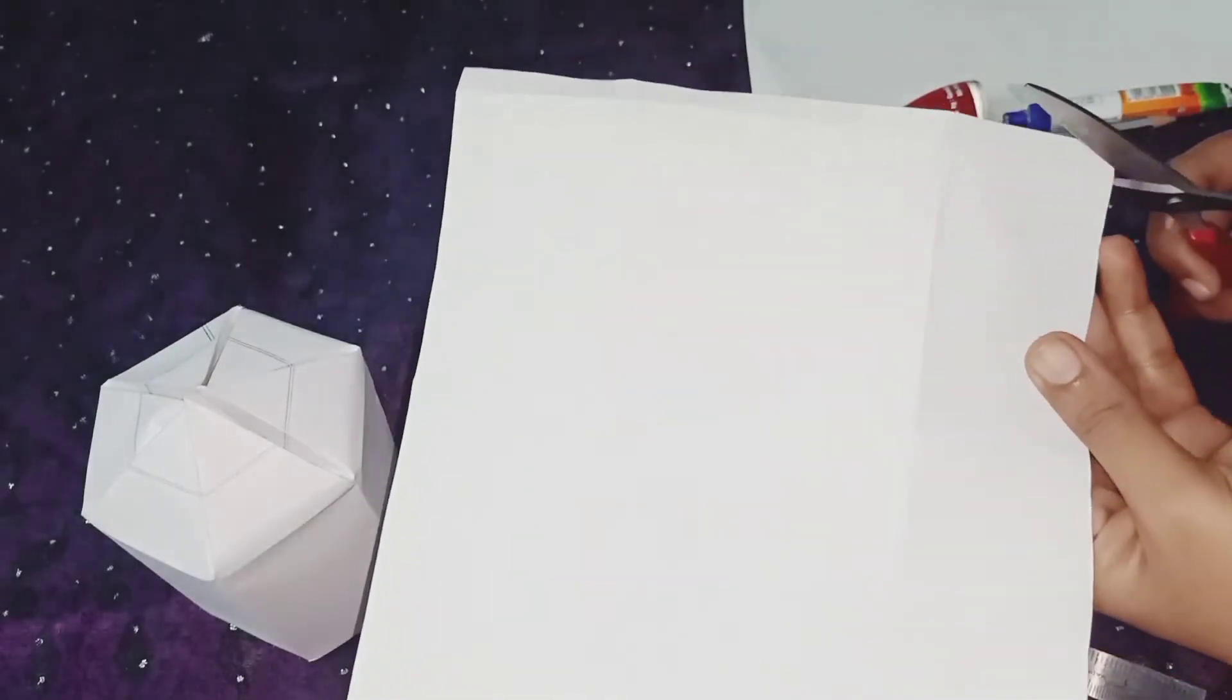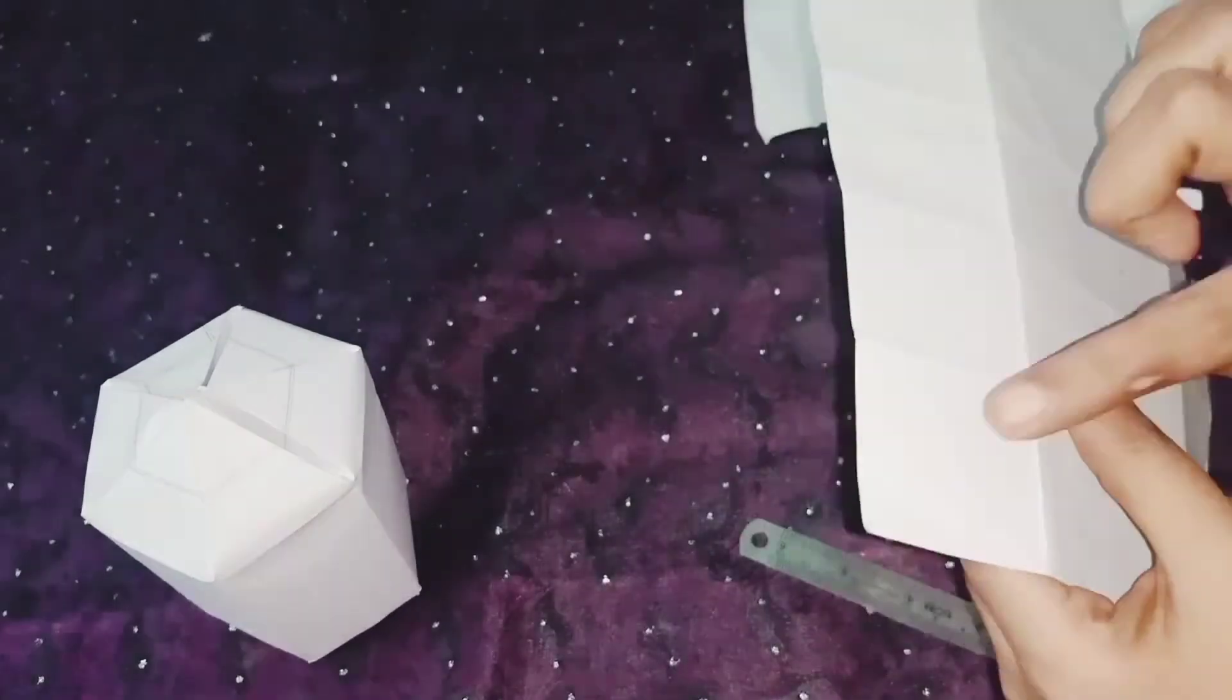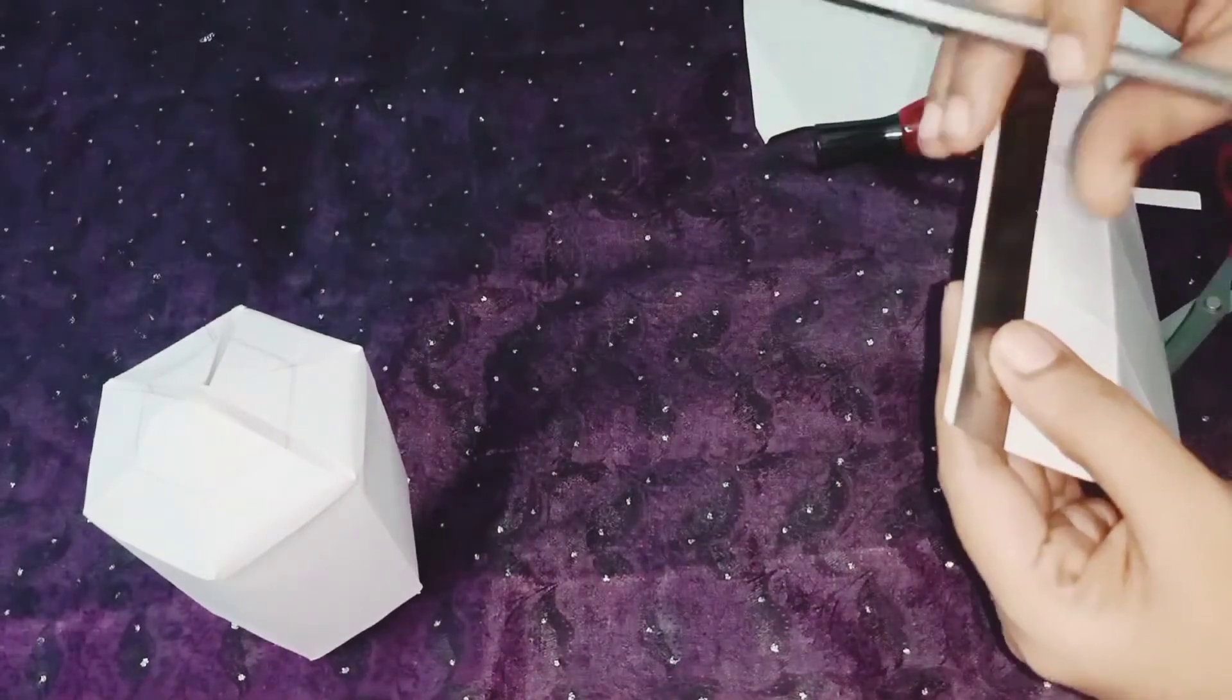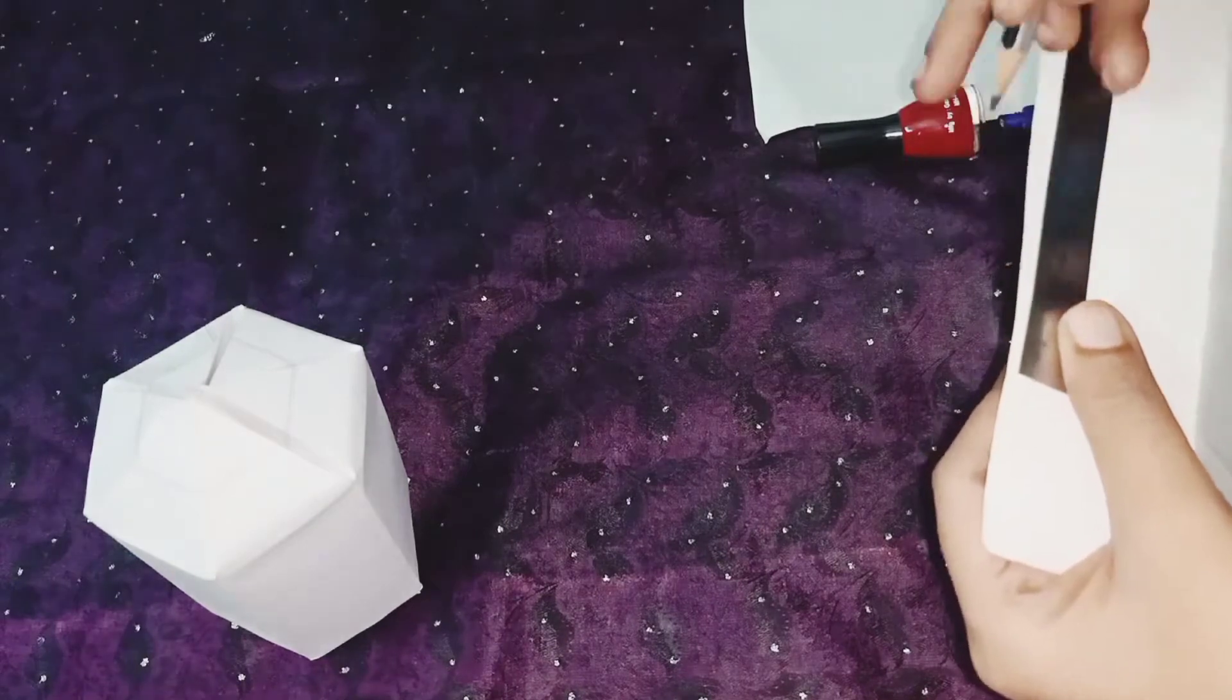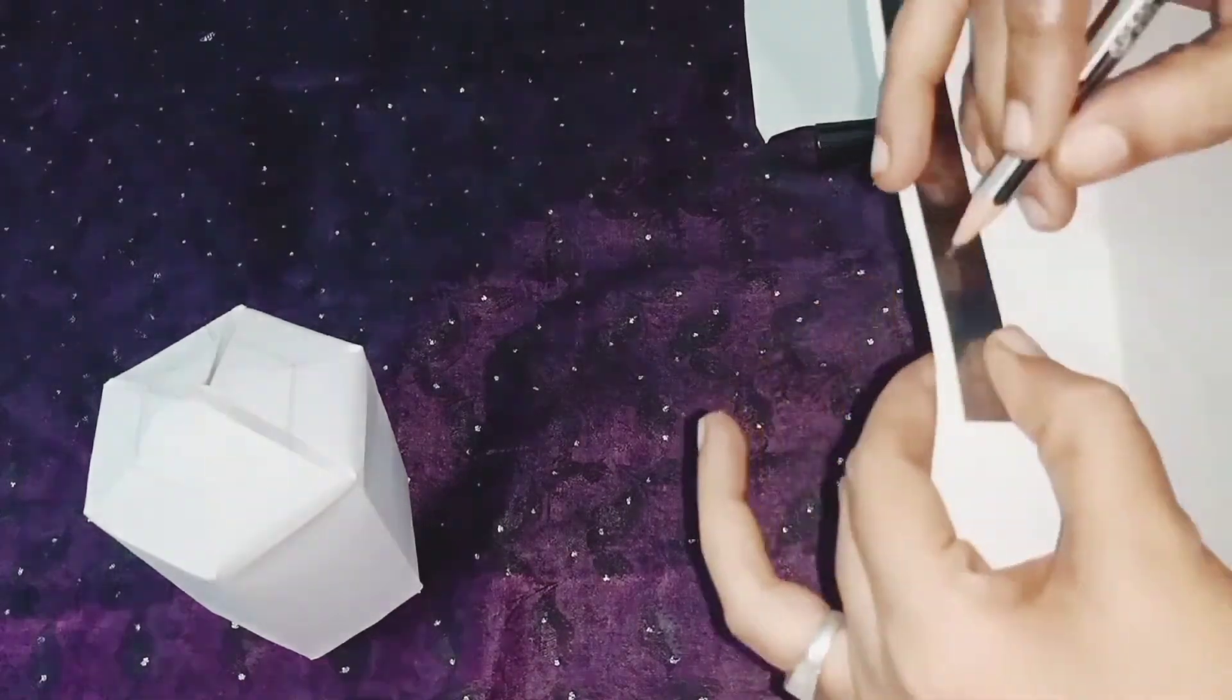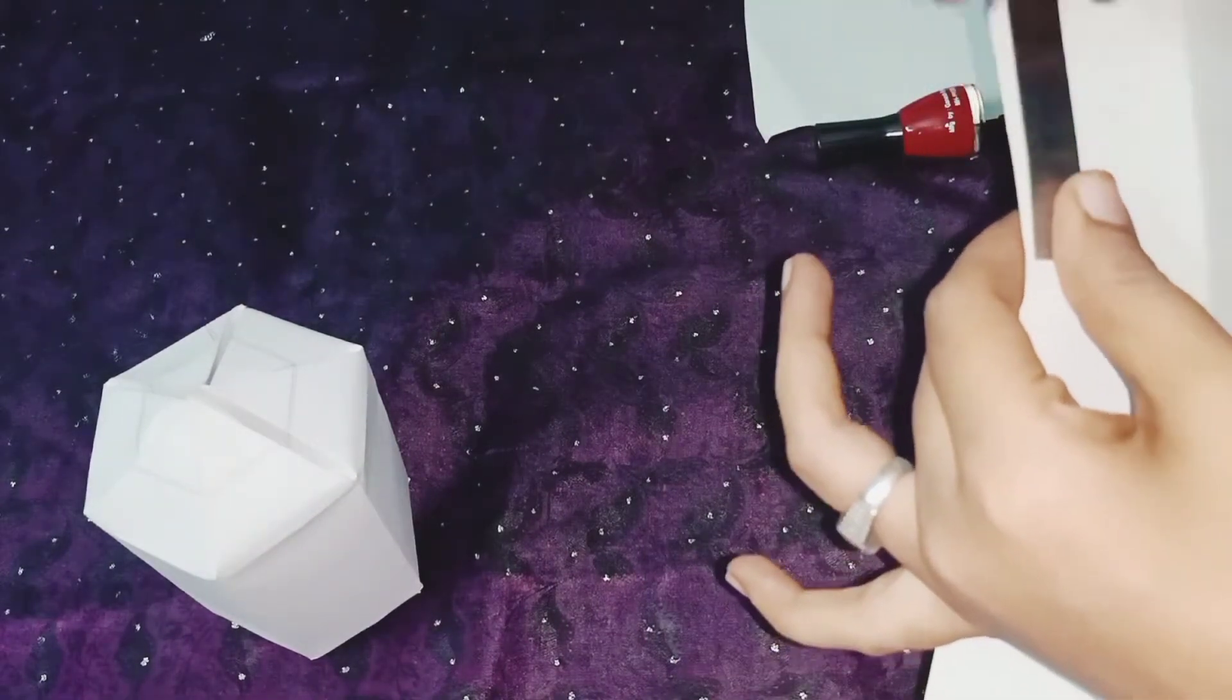And in the bottom side we don't need that 0.5 space, so we can cut it children. Now we have to mark top portion alignment as we have measured 5 centimeter. In that mark the half which is 2.5 centimeter, the center point of each folding paper.